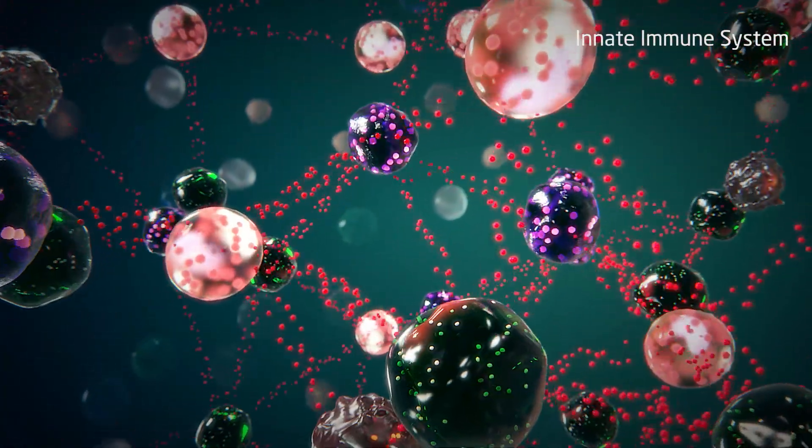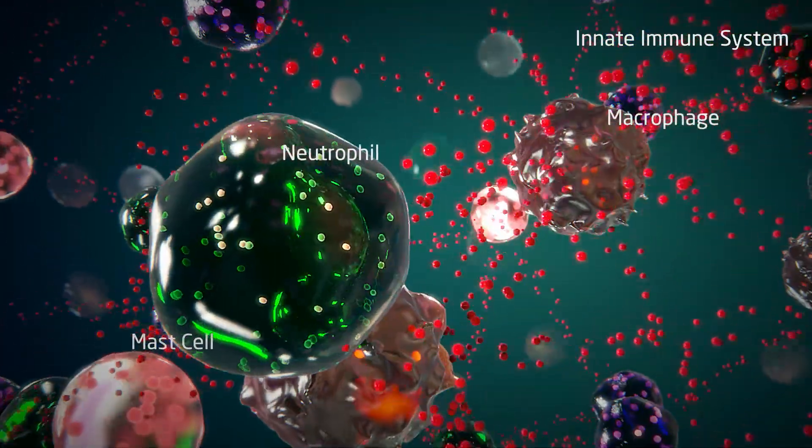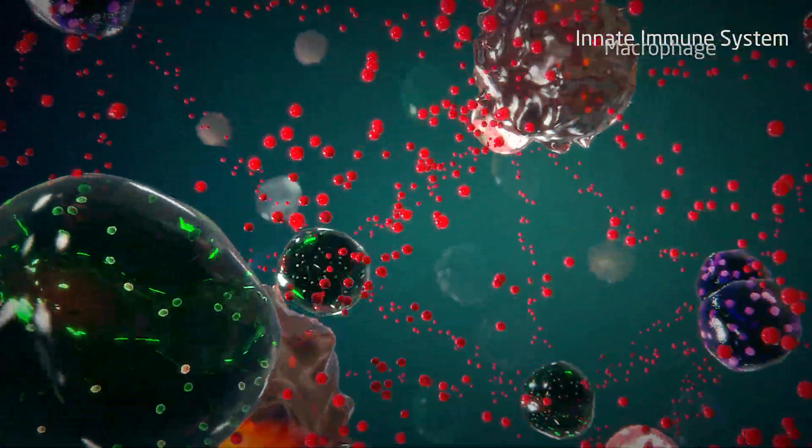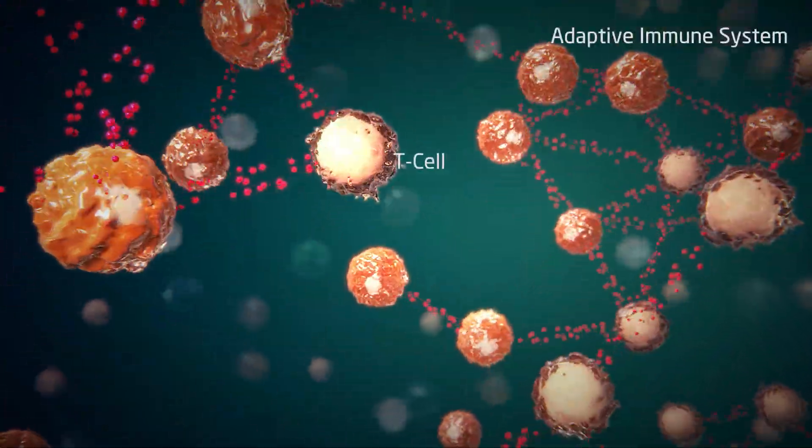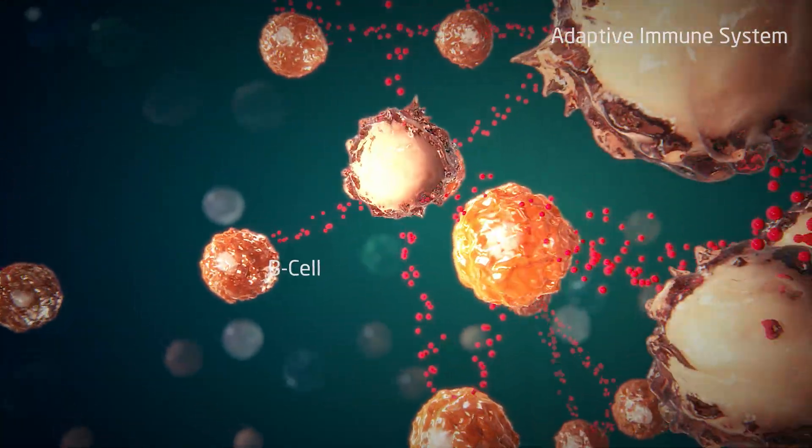The innate immune system involves non-specific defense mechanisms that attack foreign antigens soon after their appearance, while adaptive immunity comprises recognition of foreign antigens before a response is instigated.